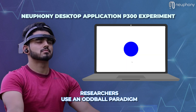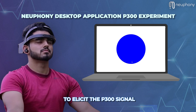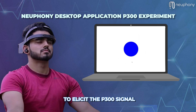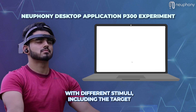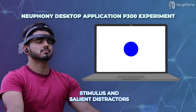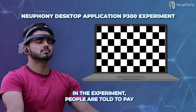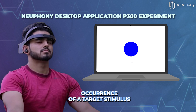In this experiment, researchers use an oddball paradigm to elicit the P300 signal. Participants are presented with different stimuli, including the target stimulus and salient distractors. People are told to pay attention to the occurrence of a target stimulus and press a button when they see it.